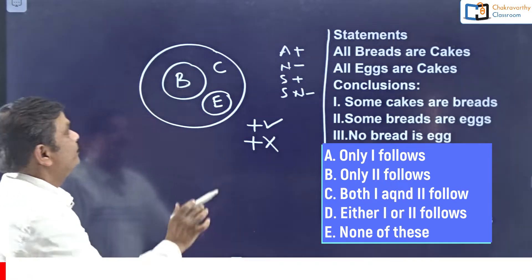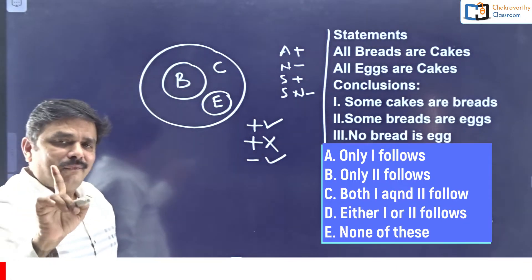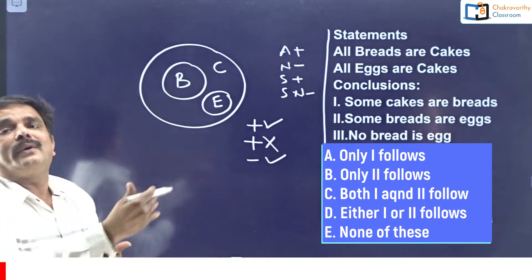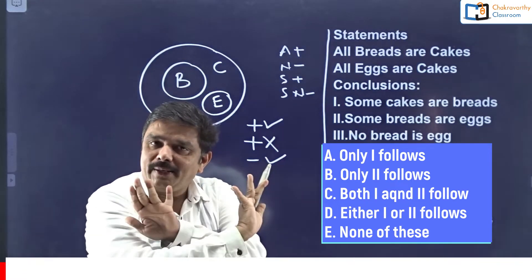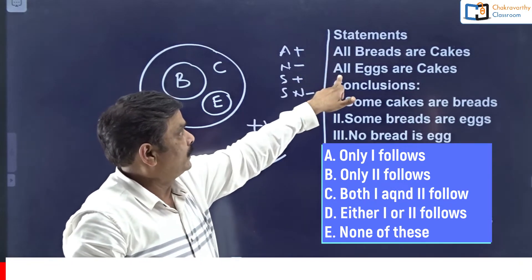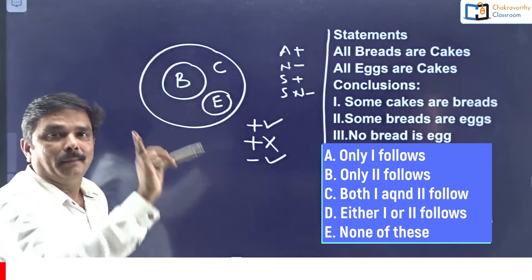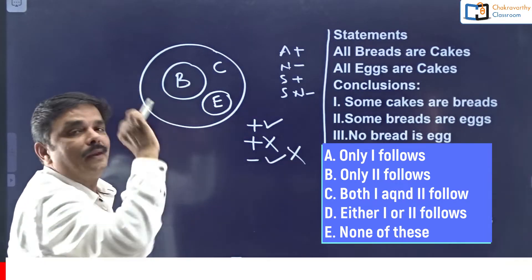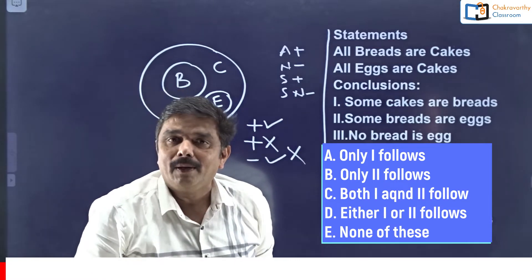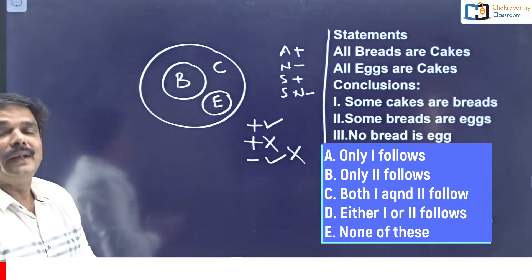Next: No bread is egg - a negative conclusion. When to go for the alternate diagram? Only when a negative conclusion is right in the basic diagram do we need to go for the alternate. When both statements are positive, one negative conclusion that is right in the basic diagram will 100% be wrong in one or more alternate diagrams. We need not write anything on the paper - we have visualized the result of the alternate diagram.